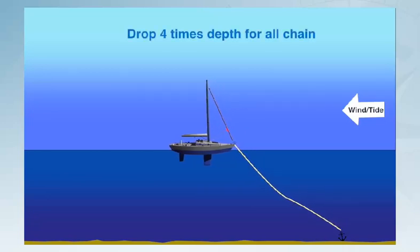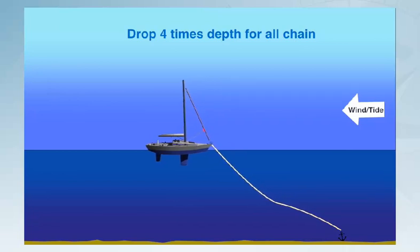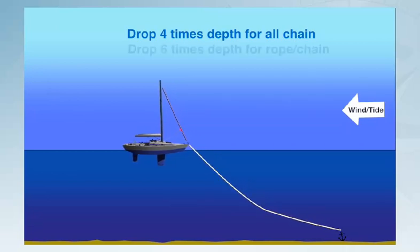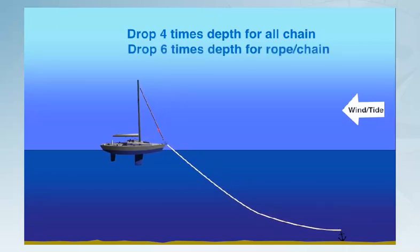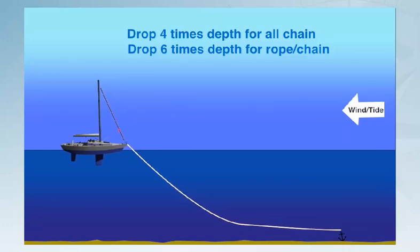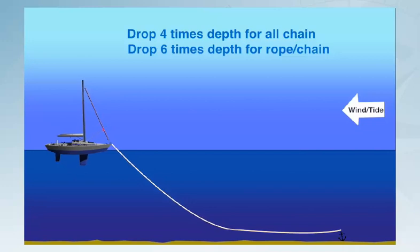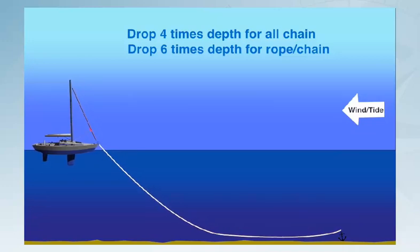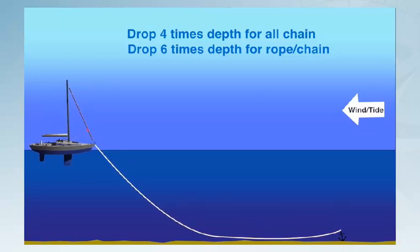We need to put out at least four times the maximum depth of the water if our anchor uses chain, or six times if it is attached to the boat with a mixture of chain and rope. The anchor chain or rope should be marked so that we can monitor how much we are paying out. When we have reached the required amount, called the scope in nautical terms, we lock off the anchor and gently apply a bit more power backwards to dig the anchor into the seabed.